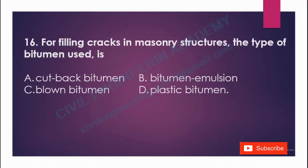For filling cracks in masonry structures, the type of bitumen used is called: A) packed bitumen, B) bitumen emulsion, C) blown bitumen, D) plastic bitumen. The answer is D, plastic bitumen.